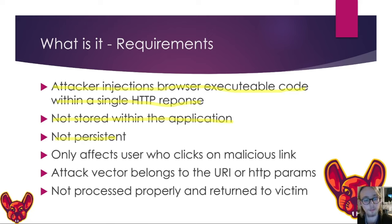Proper character encoding is the biggest challenge in protecting against XSS. Developers must encode every single potentially problematic character. For example, a '<script>' tag might be filtered, but '%3cscript%3e' — where %3C and %3E are URL-encoded less-than and greater-than signs — might not be. If the webpage renders those encoded values as actual angle brackets, we still have XSS. The test objective is to identify where a value is reflected in the response and assess whether filters can be bypassed.